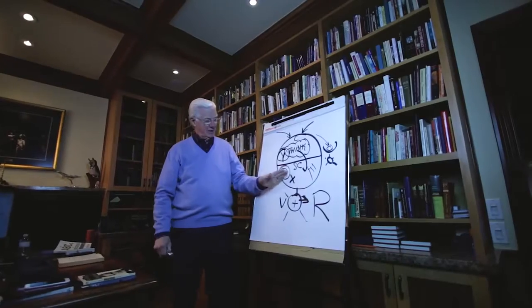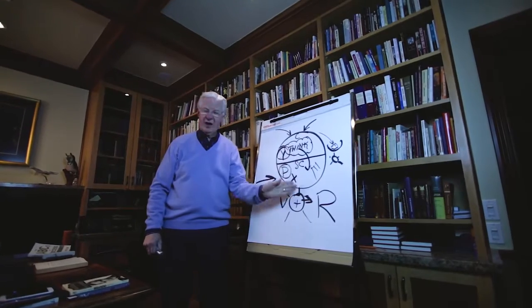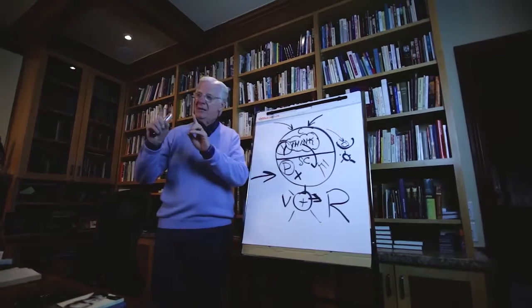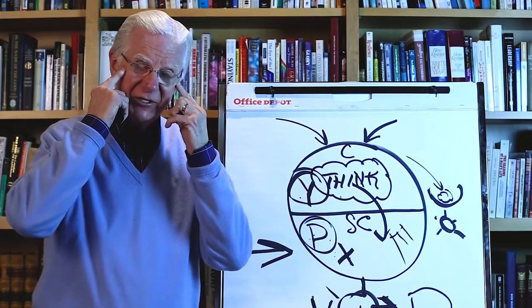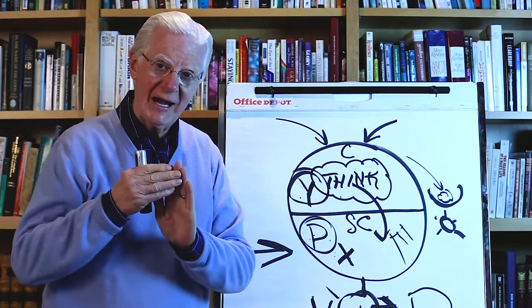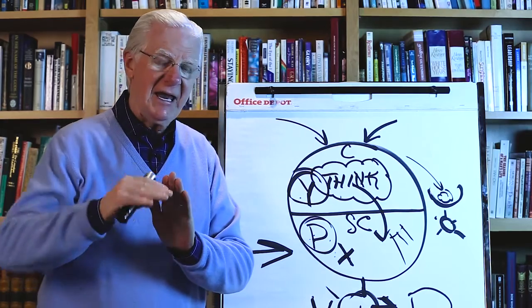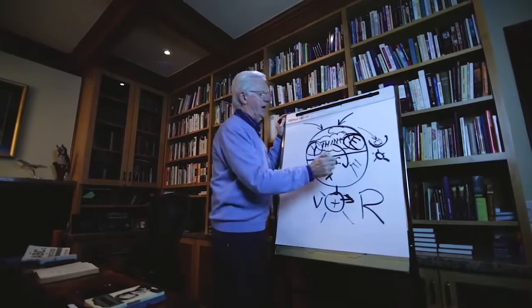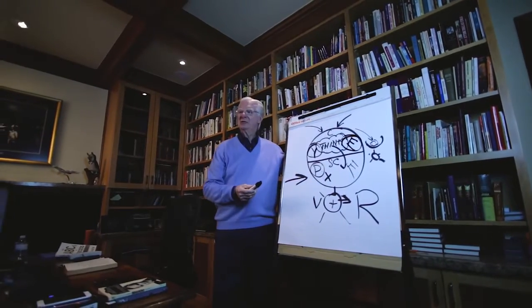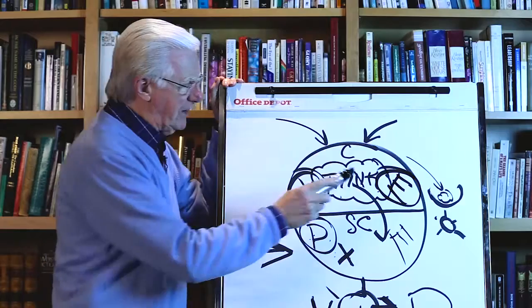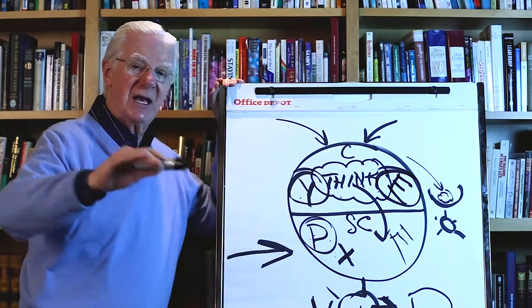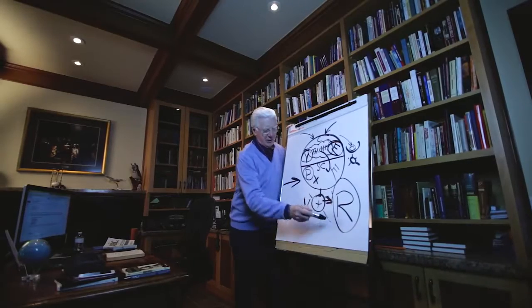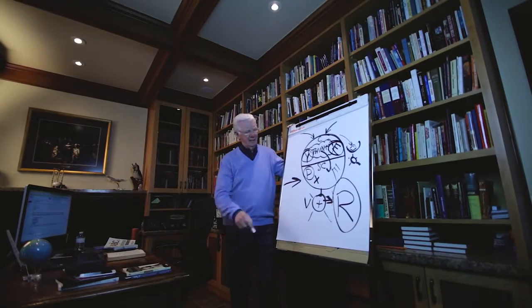But understand this: the paradigm and the thinking control the vibration you're in, and the vibration you're in is going to dictate what you attract. People that are in a poverty consciousness will continue to attract lack and limitation. It has nothing to do with what's going on here. This is your educated mind, and you can gather all kinds of information. Have you ever wondered why some people have such an educated mind? They have degrees coming right off the end of their business card, but it doesn't show up in their results. Why? Paradigm.